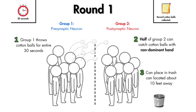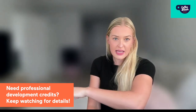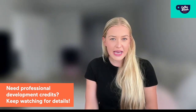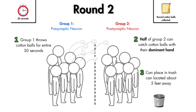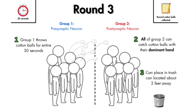Half the students on the post-synaptic side catch with their non-dominant hand, then put caught balls in a trash can at the back of the room — so not many balls are caught. Round two: same 30-second structure, but the post-synaptic side uses their dominant hand and the trash can is slightly closer, so maybe they catch more. Round three: everyone on the post-synaptic side can catch, and the trash can is a little closer again.